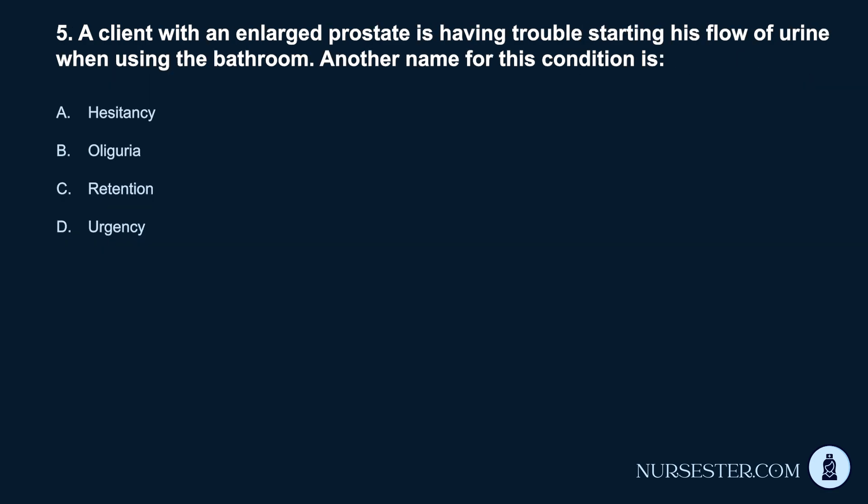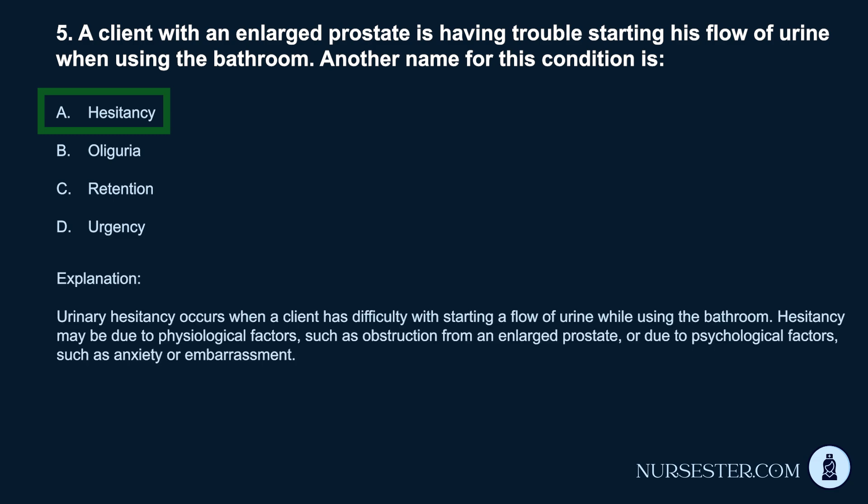Question 5. A client with an enlarged prostate is having trouble starting his flow of urine when using the bathroom. Another name for this condition is: a. Hesitancy. b. Oliguria. c. Retention. d. Urgency. Correct answer: a. Hesitancy. Urinary hesitancy occurs when a client has difficulty starting a flow of urine while using the bathroom. Hesitancy may be due to physiological factors, such as obstruction from an enlarged prostate, or due to psychological factors, such as anxiety or embarrassment.